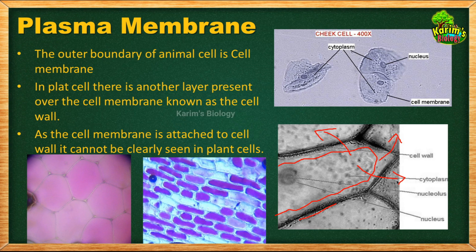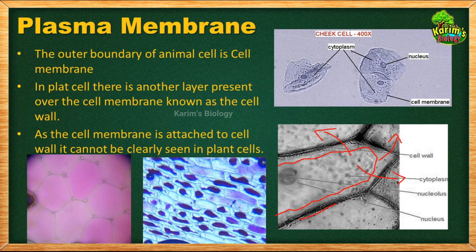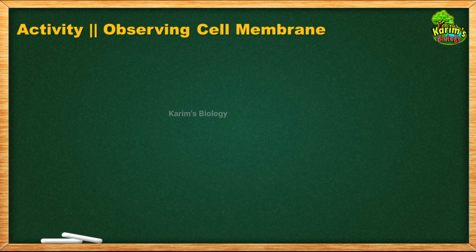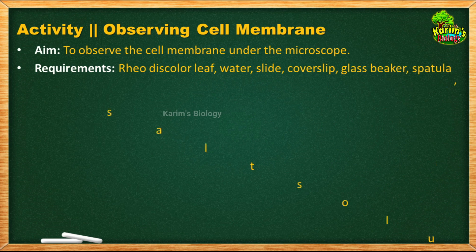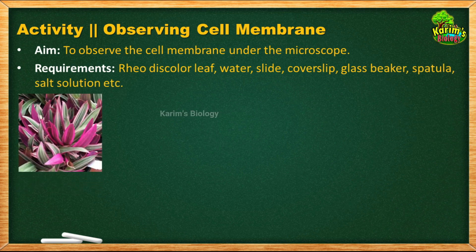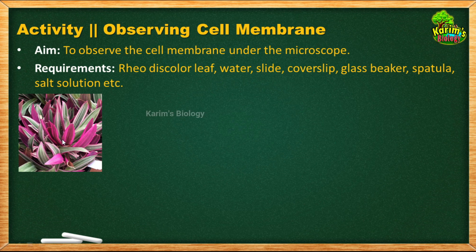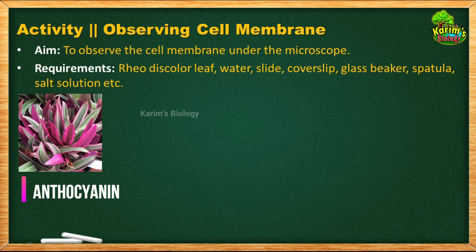Now let us look at the aim, requirements, and procedure of the experiment to observe the cell membrane under the microscope. The aim is to observe the cell membrane under the microscope. For requirements, we need a Rhoeo discolor leaf. This is an ornamental plant often grown in gardens. The upper surface of the leaf is green, but the lower surface is purple because the lower epidermal cells contain a pigment called anthocyanin.